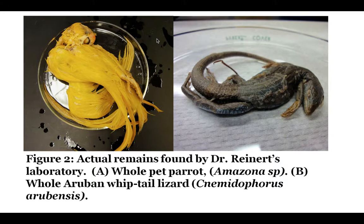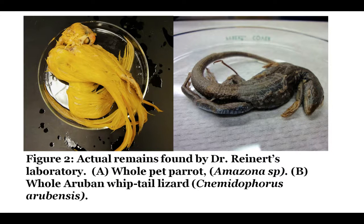Sometimes we were able to find entire prey. Here there was an entire pet parrot. So the boa constrictor is clearly an invasive species if it's eating someone's pet parrot.